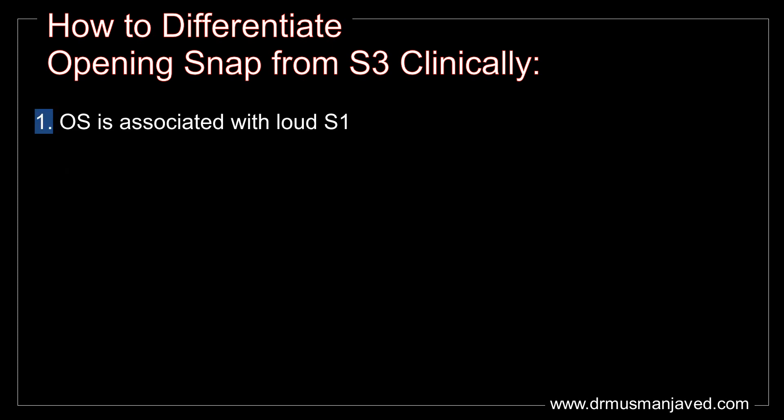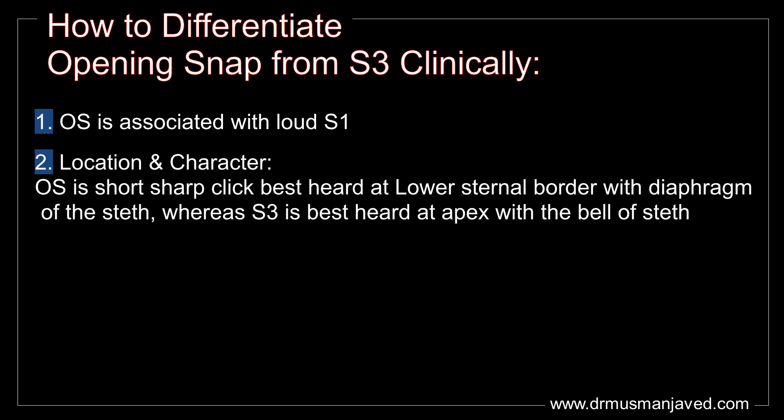The first major difference is that the opening snap is associated with a loud first heart sound. Secondly, the opening snap is a short sharp click best heard at the lower sternal border with the diaphragm of the stethoscope, whereas the third heart sound is best heard at the apex with the bell of the stethoscope.